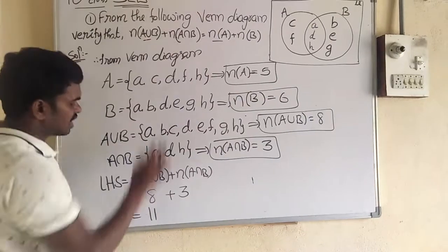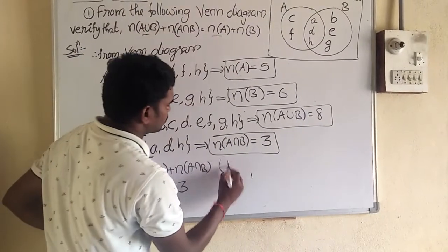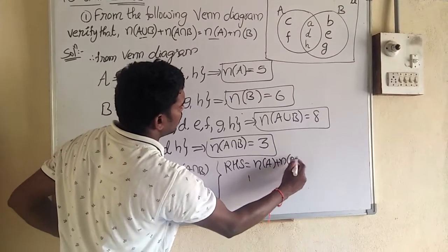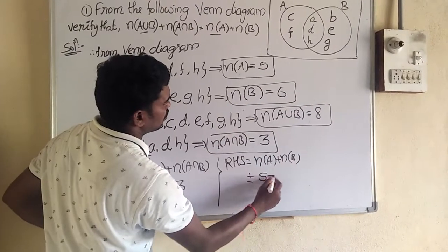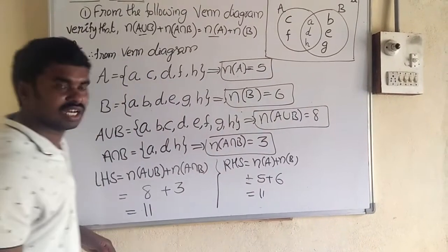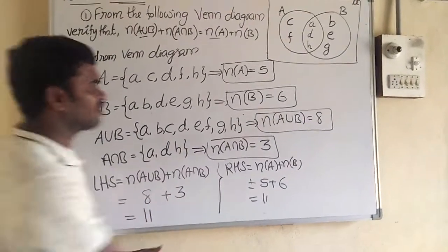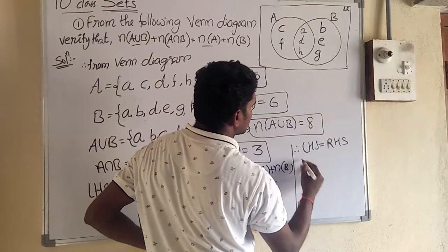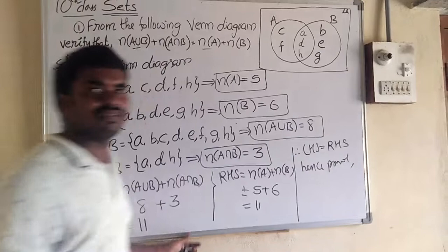The value of LHS is 11. Now finding the value of RHS: N of A plus N of B equals 5 plus 6 equals 11. LHS equals 11, RHS equals 11. Therefore LHS is equal to RHS. Hence proved.